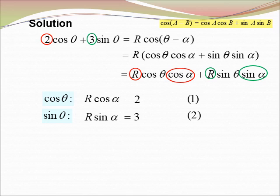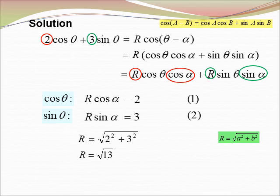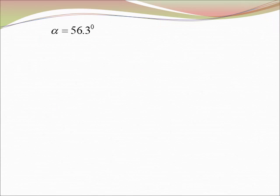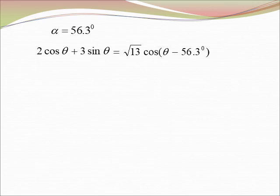From our case A = 2 and B = 3. So R = √(A² + B²) = √(2² + 3²) = √13. Then tan α = B/A = 3/2, giving α = 56.3°. Substituting R and α, we get 2 cos θ + 3 sin θ = √13 cos(θ − 56.3°).